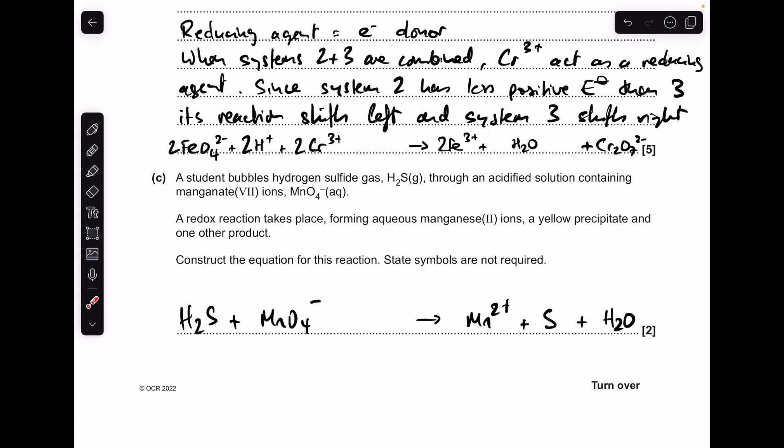The way I'm going to balance this equation is again using the oxidation number method. We need to work out the oxidation number changes in the reaction. If we look at the sulfur, it starts at minus 2, it goes up to 0, so it's an increase of 2. The manganese starts out at plus 7 and it drops by 5 to plus 2.